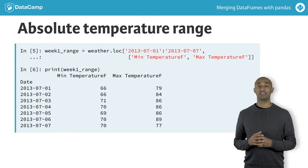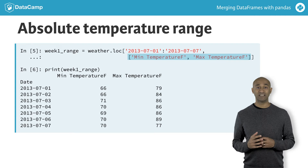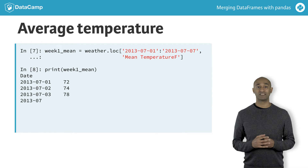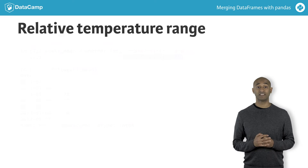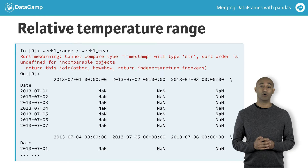To begin, slice the min temperature F and the max temperature F columns as a data frame week 1 range. Next, slice the mean temperature F column as a series week 1 mean.